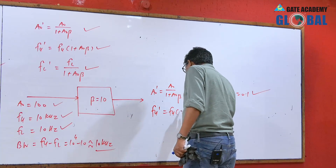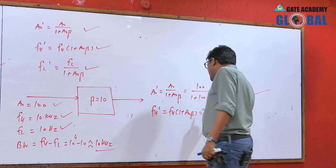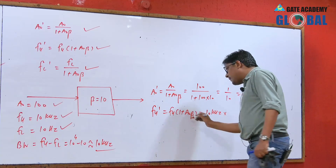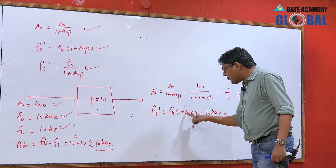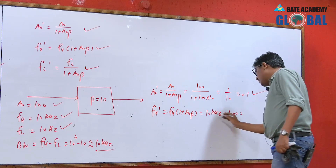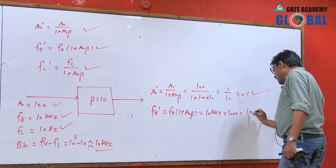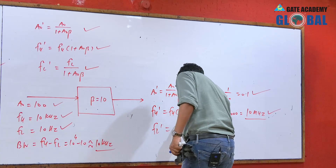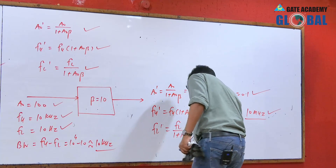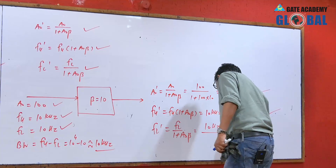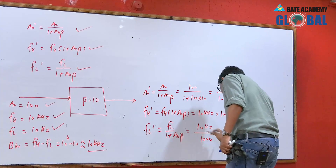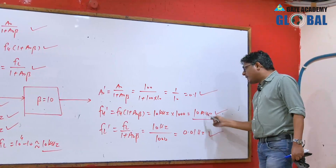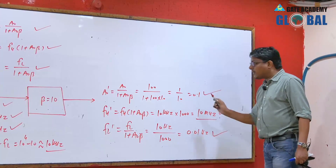FH dash = FH into (1 plus A0·beta). A0·beta = 1000, neglecting 1: FH dash = 10 kHz × 1000 = 10 MHz. Higher 3dB frequency increases to 10 MHz. FL dash = FL upon (1 plus A0·beta) = 10 Hz / 1000 = 0.01 Hz. Lower 3dB frequency with feedback decreases to 0.01 Hz. Higher 3dB frequency with feedback increases, mid-band gain decreases.